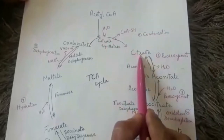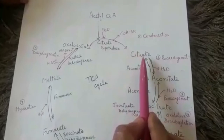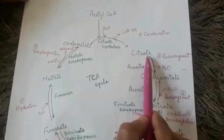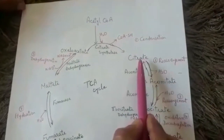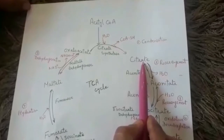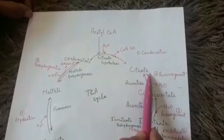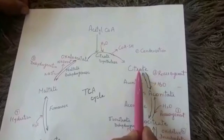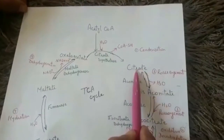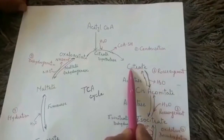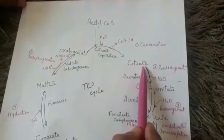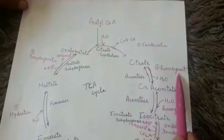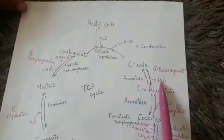The first product is citric acid or citrate, which is why this cycle is known as the citric acid cycle. Citric acid has three carboxylic groups, which is why this cycle is also known as the TCA cycle — tricarboxylic acid cycle.